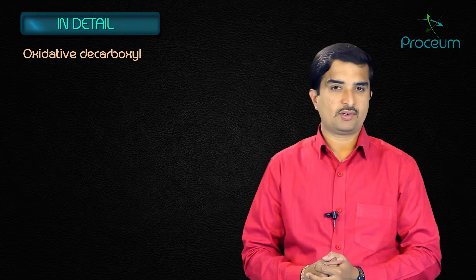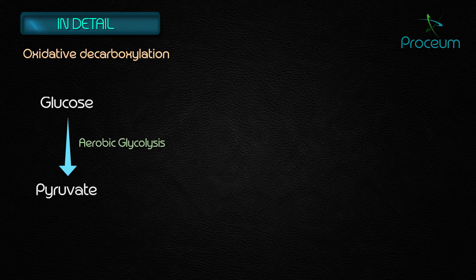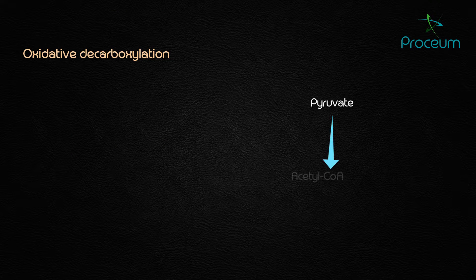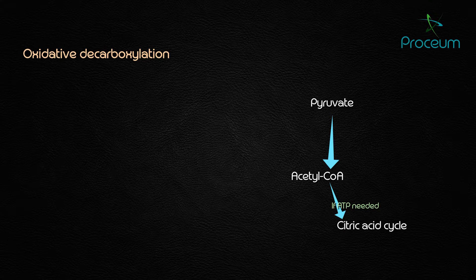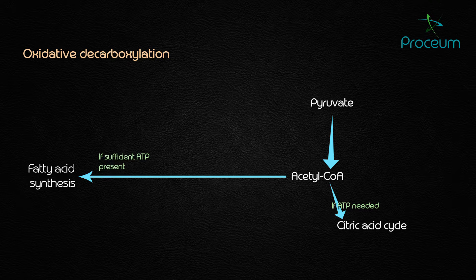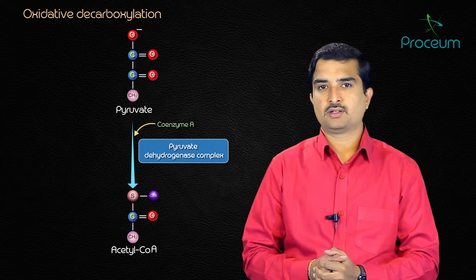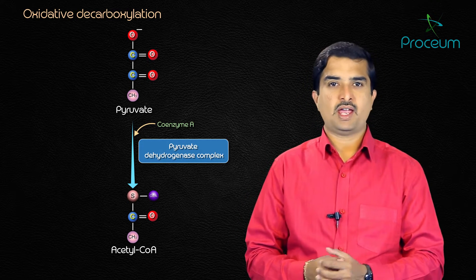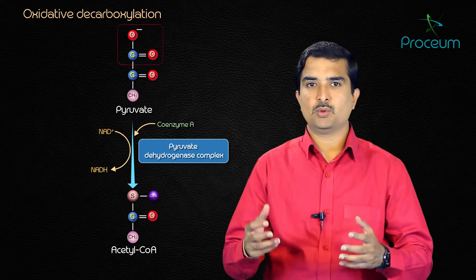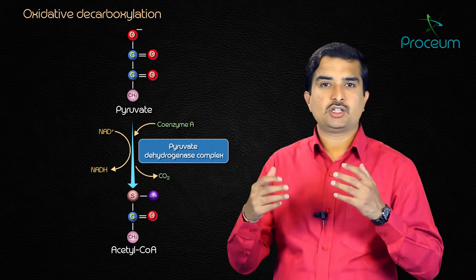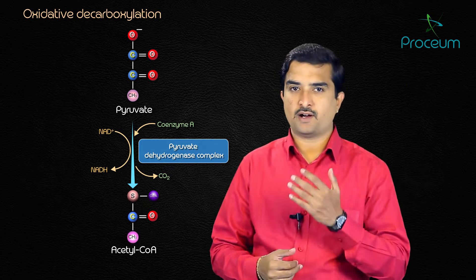Pyruvate from aerobic glycolysis enters the mitochondria where it may be converted into acetyl-CoA for entry into the citric acid cycle if ATP is needed, or for fatty acid synthesis if sufficient ATP is present. The overall reaction catalyzed by the pyruvate dehydrogenase complex is oxidative decarboxylation — an irreversible oxidation process in which the carboxyl group is removed as carbon dioxide and the two remaining carbons become the acetyl group of acetyl-CoA.